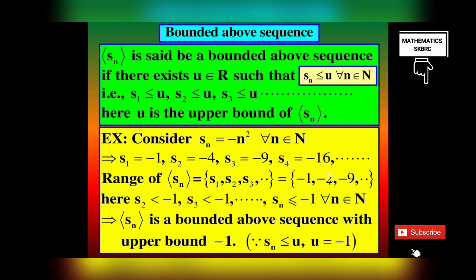Consider a sequence SN equal to minus N squared for all N belonging to N. Here S1 = -1, S2 = -4, S3 = -9, S4 = -16, and so on. The range of SN = {-1, -4, -9, -16, ...}. We have SN less than or equal to -1 for all N belonging to N. Here -1 is the upper bound of sequence SN. Therefore the sequence SN = -N² is a bounded above sequence with upper bound -1.